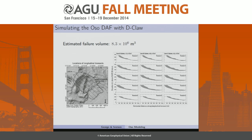So as Dick mentioned, to initiate the numerical model, we of course need a failure volume. The model doesn't determine that — we have to input that into the model. We couldn't have had it better because we had 2013 and 2014 LIDAR. But because there's still material in the source region, we couldn't just difference those, so we created the failure surface. There were three different options and we went with the middle one, which was 8.3 million cubic meters.